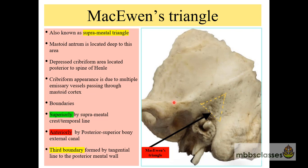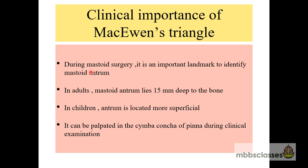McEwen's triangle has a cribriform appearance — there are multiple dot-like depressions so it looks like a sieve. These depressions are formed due to multiple emissary vessels passing through the mastoid cortex. The clinical importance of McEwen's triangle is that it is an important landmark to identify the mastoid antrum during mastoid surgeries.